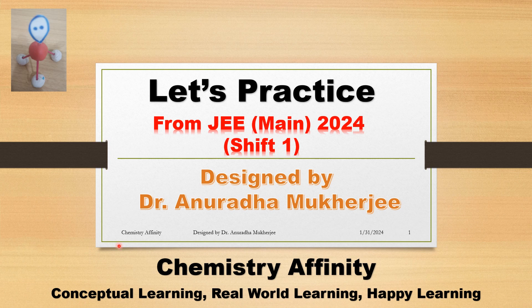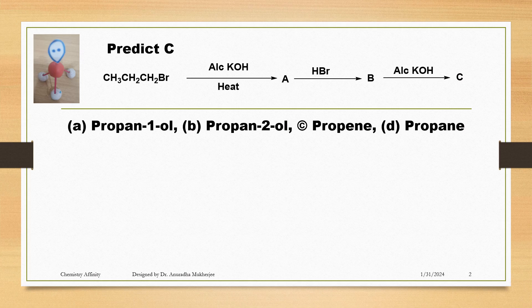Today's let's practice video I am going to discuss an organic chemistry problem from the JEE Main 2024 shift one. Propyl bromide is treated with alcoholic KOH followed by heating.